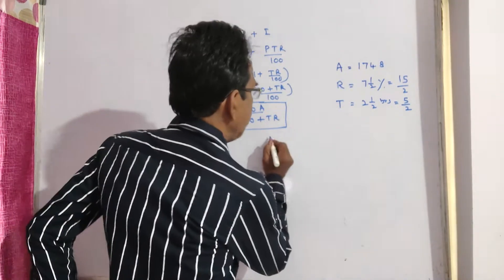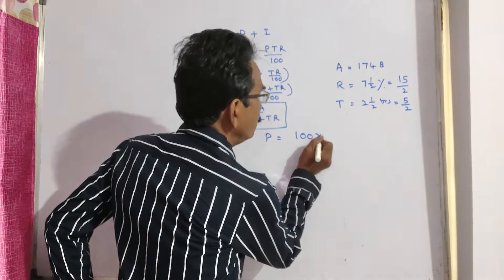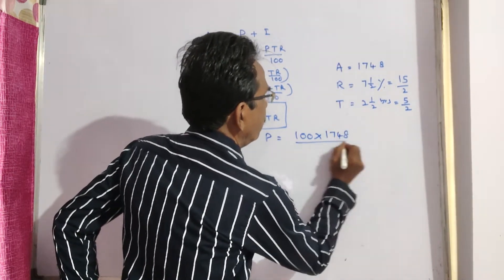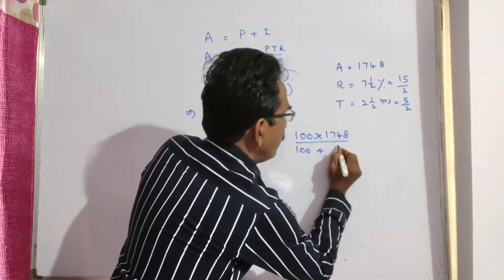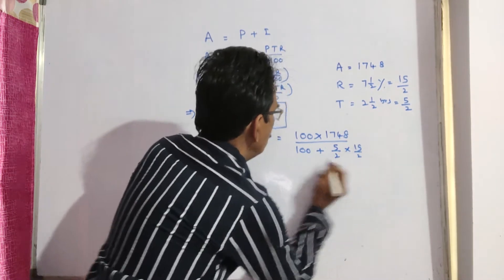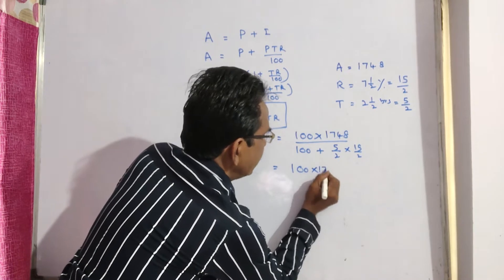See, P is equal to 100 into A, A is 1748, by 100 plus TR, that is 5 by 2 into 15 by 2. This is equal to 100 into 1748 by 75 by 4.